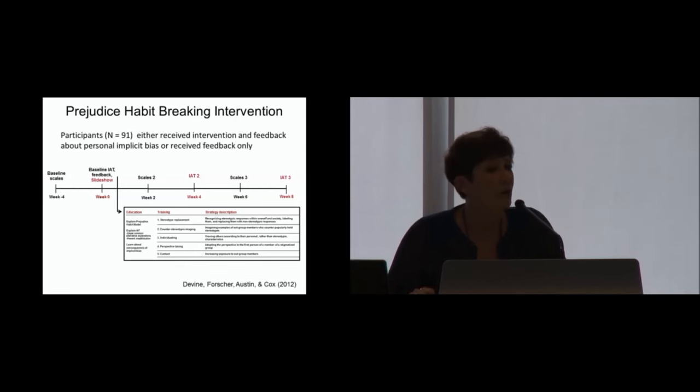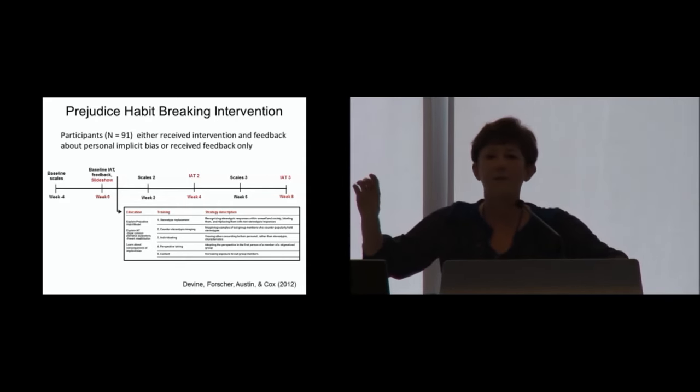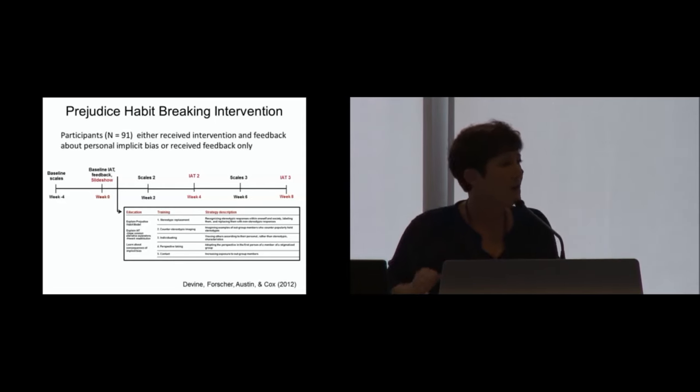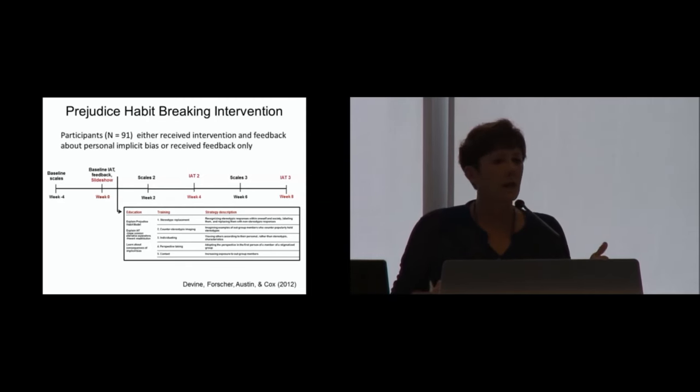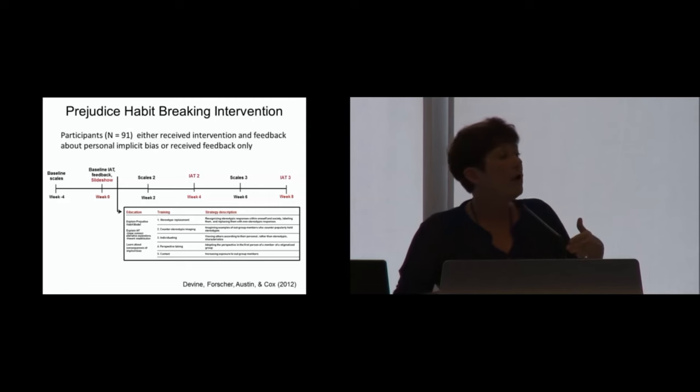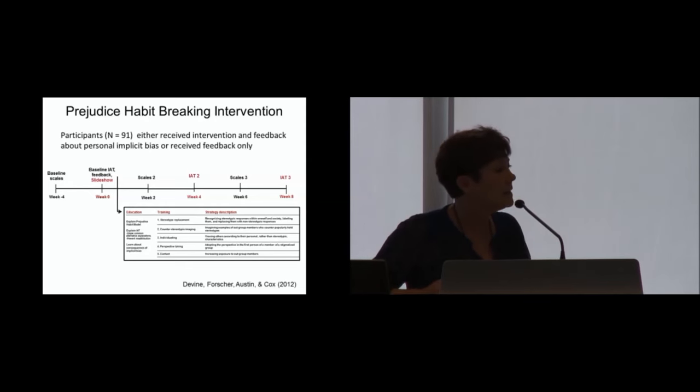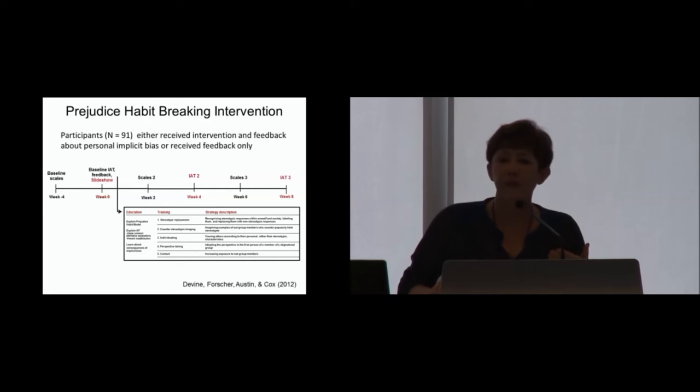Now, we took all of that together, and we developed what I call a prejudice habit-breaking intervention. And I'm just going to share with you the general aspects of this slide. Basically, what we decided we needed to do was to create an intervention that did all of those things that I talked about early on. So we have a randomized control experiment where participants come into the lab. They're going to be randomly assigned to our training group or a control group. For the control group, basically what we do is we have them come in, they take the IAT, they get their own personalized feedback, and they leave the lab. Over the next eight weeks, they come back to the lab twice to fill out the IAT, and in the intervening weeks, they fill out a variety of explicit measures that measure their attitudes, their sense of awareness of their own failures, and so on.